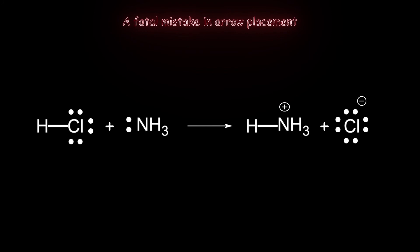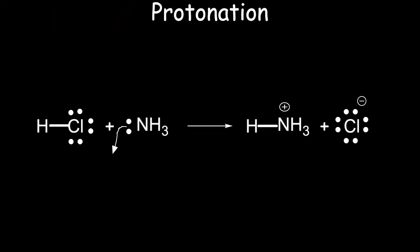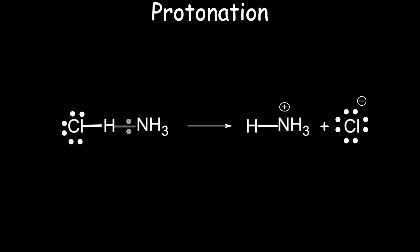In the next animation, there is a fatal mistake in the curved arrow mechanism — surprisingly, this is a common mistake in organic chemistry by students. Often it is shown that the hydrogen migrates. The HCl bond is polarized so that hydrogen is least electronegative, or electron-poor. The arrow should not start there and point towards the electron-rich nitrogen. The next animation shows the correct mechanism for a protonation reaction. The arrow starts with the lone pair on the nitrogen, which attaches to the hydrogen, which then releases the chlorine.